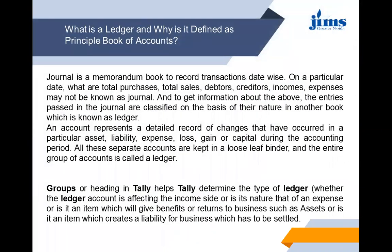What is a ledger and why is it defined as a principal group of accounts? A journal, which is called a memorandum book, is used to record transactions date-wise — on a particular date, what are the total purchases, total sales, debtors, creditors, income, and expenses. To get information about these, the entries passed in the journal are classified on the basis of their nature in another book, which is known as the ledger.